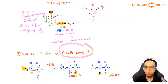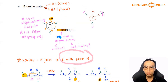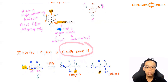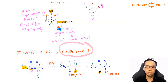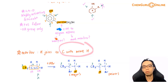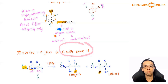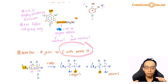Before we discuss this, why is there an obsession with the major product? It's because exam questions want one answer — they ask you to draw the product when this reacts with bromine water. If they only want one answer and more than one product can form, we need to draw the major product. We are obliged to show the major product; we cannot draw the minor product. That's why we spend so much time discussing how to deduce it.